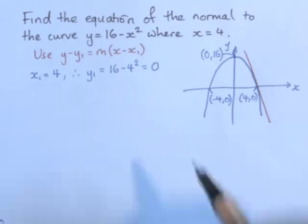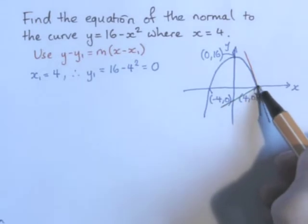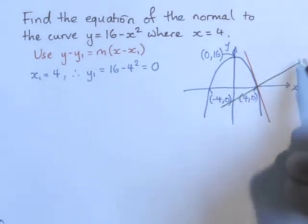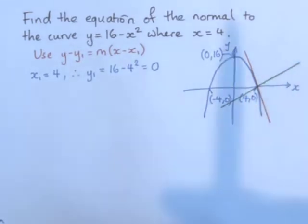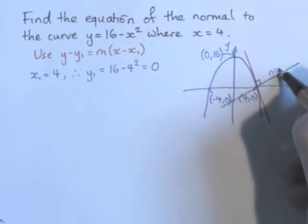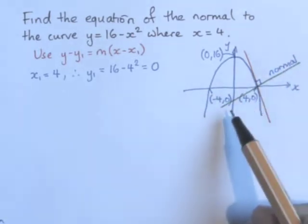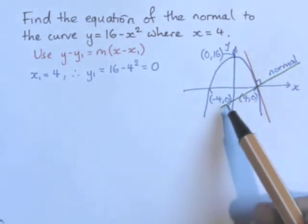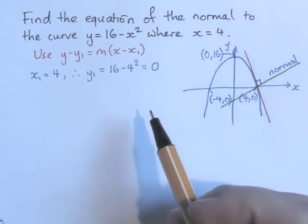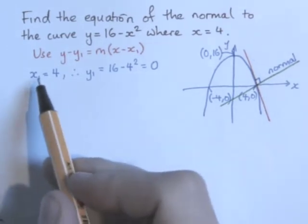And if we were to draw the normal, which is perpendicular to the tangent, that would be the line that we get. So this is the line whose equation we want to find. We have x₁ and y₁. Now we need m.